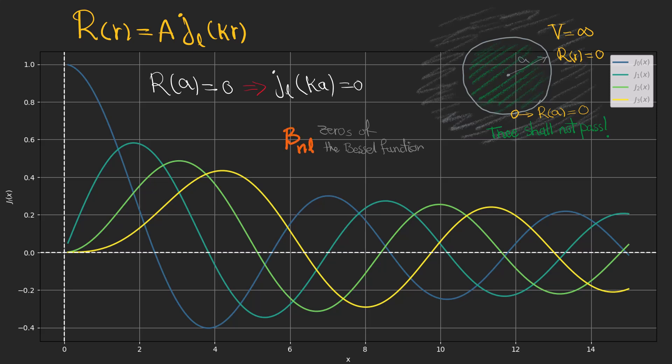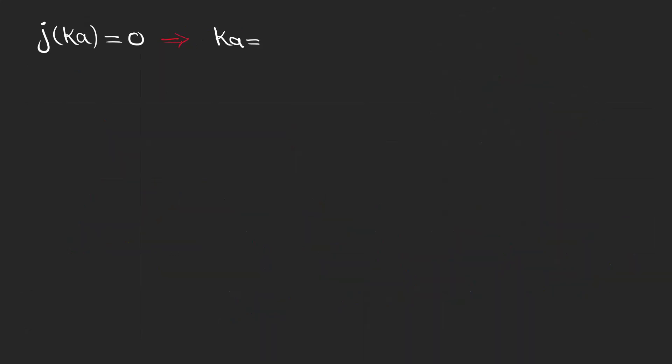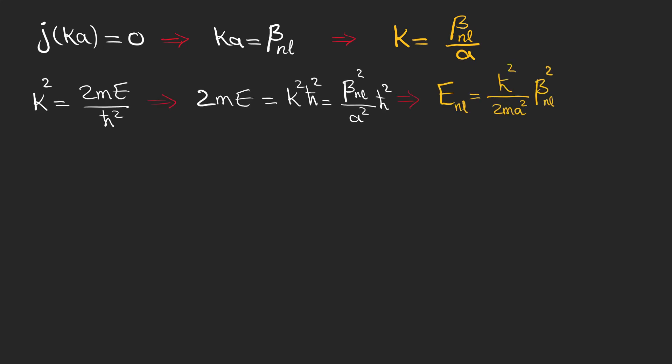Let's denote these zeros by beta n L, and for example, for J0, the first five zeros are shown on the graph. So we can find different k's based on our betas, and now we have the energy levels which depend on N and L, and these are the wave functions.